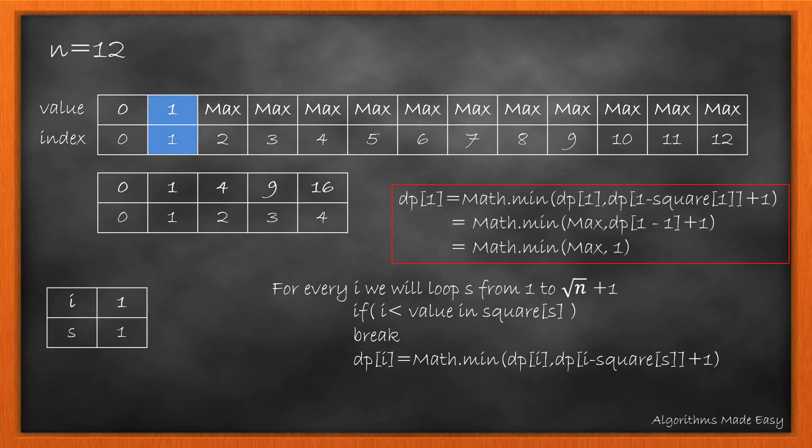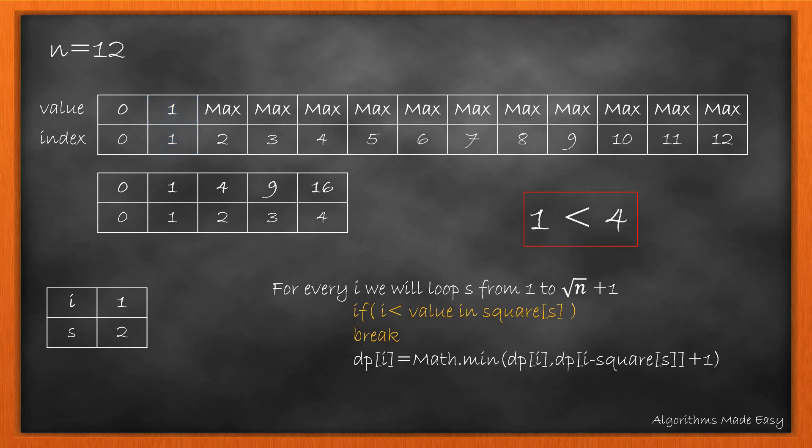For s equal to 1 we will find the minimum value and update dp array. Now as i is less than value at s in square array we break the loop. This is logically correct as 1 cannot be created with 4 or any other higher square. So we have already found the minimum value and need not to go any further.